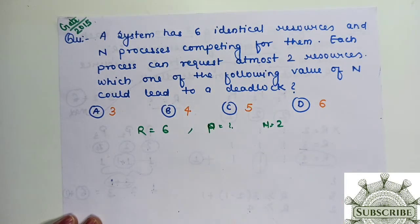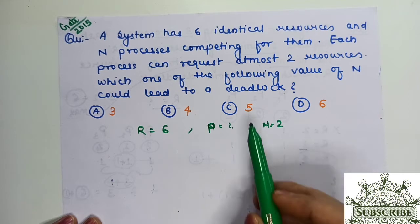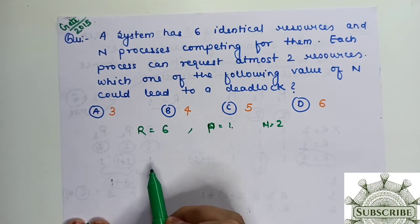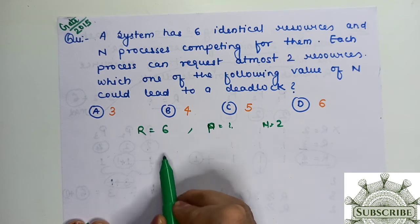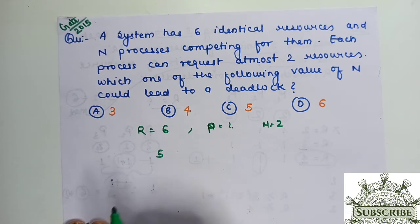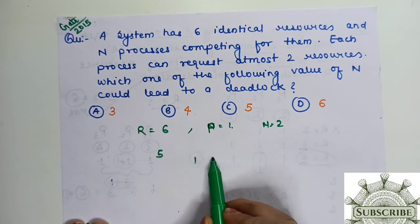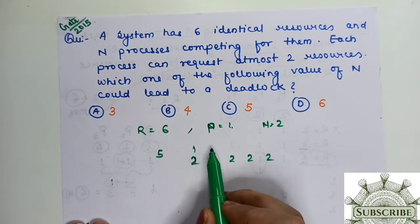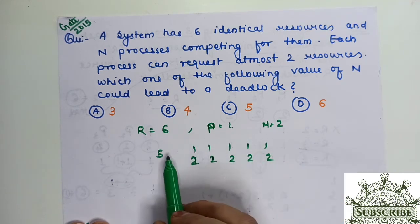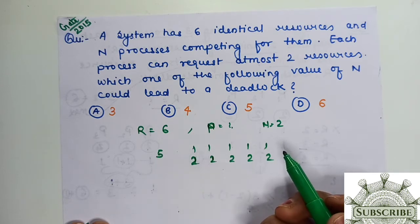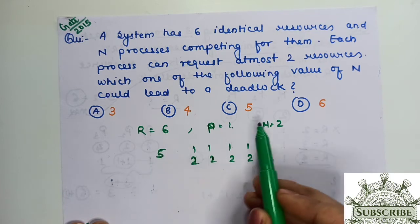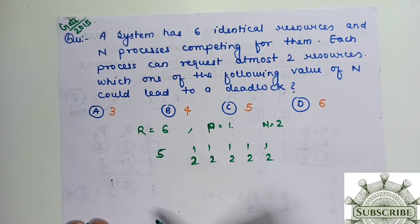The situation is same as the last question. Here also 6 instances of resources, demand of all processes is 2. Maximum value of n that can avoid deadlock is 5. So 5 won't go into deadlock, 4 won't, 3 won't either. We have 6 instances. If we reduce one, that's 5 resources. Each process needs 2 instances. We give one to each, that's 5 distributed.